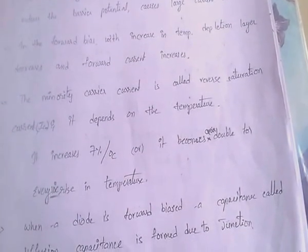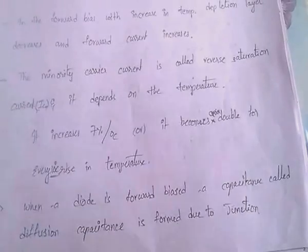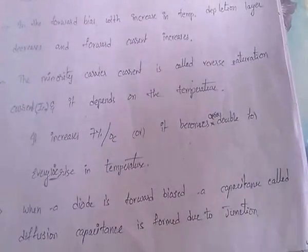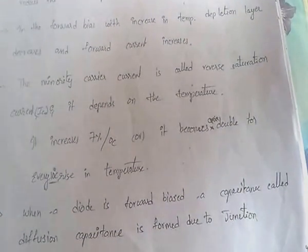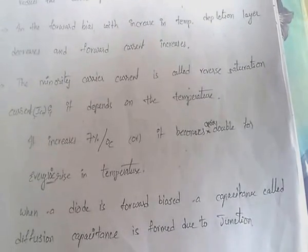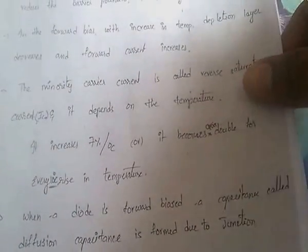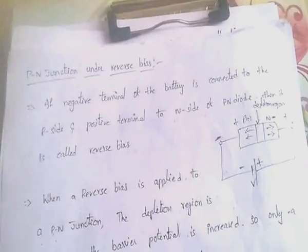When the diode is in forward biased, the capacitance is called diffusion capacitance, and it is formed due to the junction.